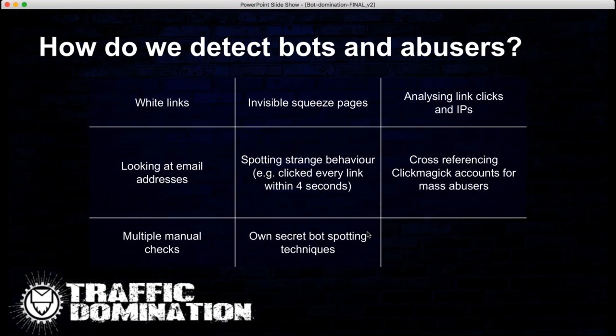Manual checks — pretty much everything is done manually. We don't have fully automated ways of doing it; everything triggered is always manually checked. We also use invisible squeeze pages — a squeeze page with two opt-in forms. If anyone opts into an invisible page, maybe hidden under a frame, we know a real user can't see it. If a bot opts in, it goes on a separate list and gets looked at. We also watch for strange behavior like clicking a link exactly every four seconds — we can see this across multiple ClickMagick accounts.